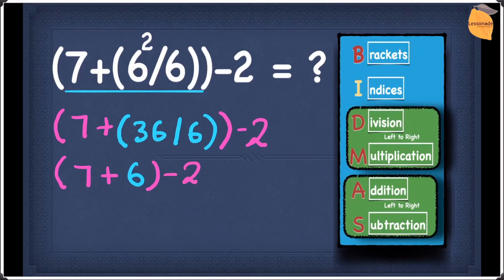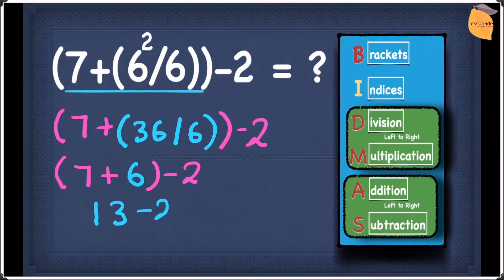Now we finish off the outer bracket, which is 7 plus 6. 7 plus 6 gives 13, and then 13 minus 2 gives 11. So the answer for this question is 11.